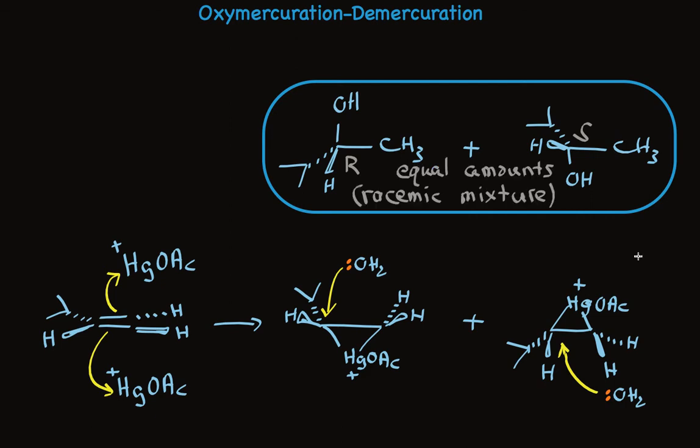So hydration of an alkene using the mercuric acetate route — mercuration followed by demercuration — is regioselective. But when a stereogenic center is formed, a racemic mixture results.